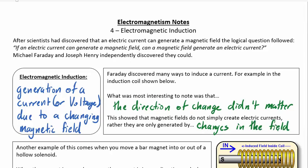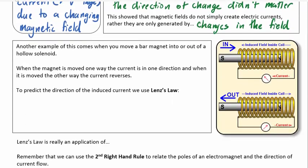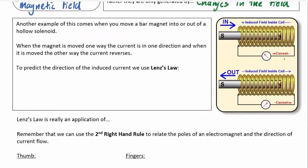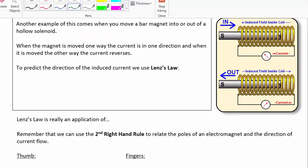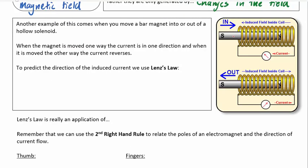And so if we're changing the magnetic field, we're going to potentially induce a current. So an example of this comes from a solenoid. So if we look at the solenoid and we have a bar magnet that we move towards a solenoid, the first thing I want you to notice is that we're going to generate a current, whether the bar magnet is moving towards the solenoid or away from the solenoid, either way.